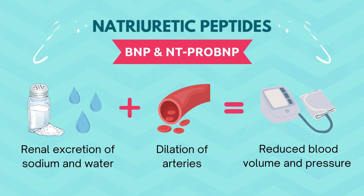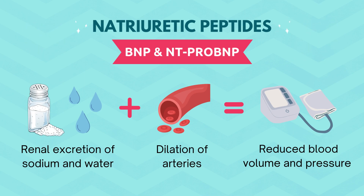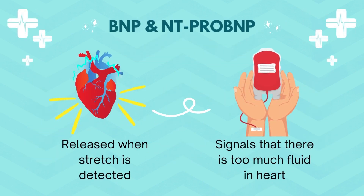The use of newer diagnostic tools to detect heart failure, such as natriuretic peptide levels in the blood, have recently been integrated into practice. Natriuretic peptides are hormones that circulate in the blood that work to increase renal excretion of sodium and cause vasodilation, ultimately acting to reduce total blood volume and thus regulate blood pressure. Brain natriuretic peptide, or BNP, is released specifically from the ventricles of the heart when stretch is detected, which signals that there is too much fluid in the heart.